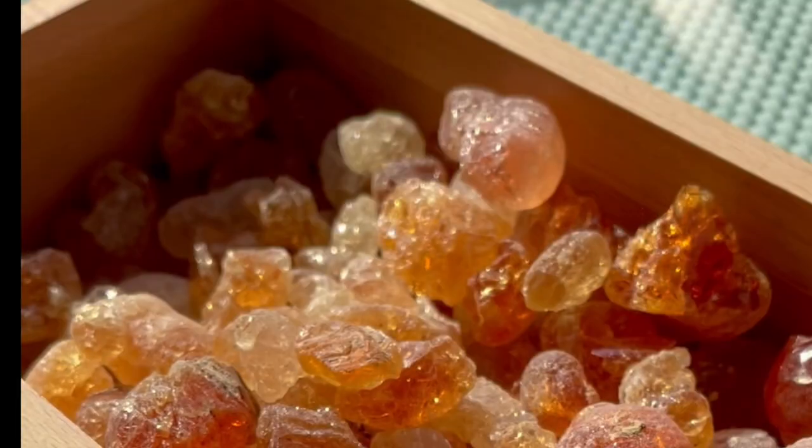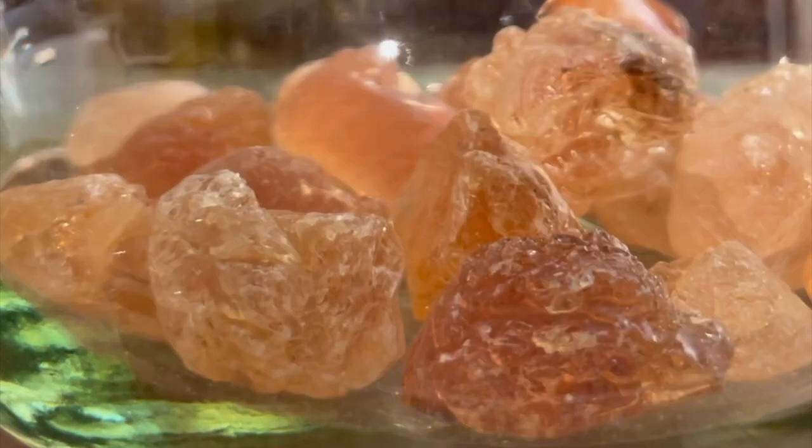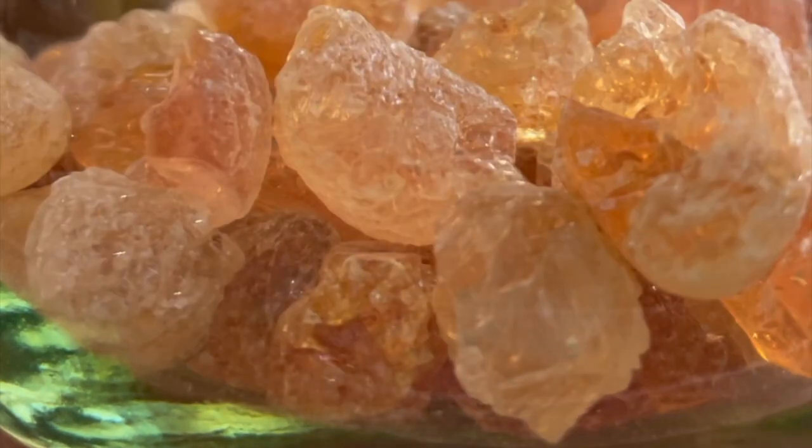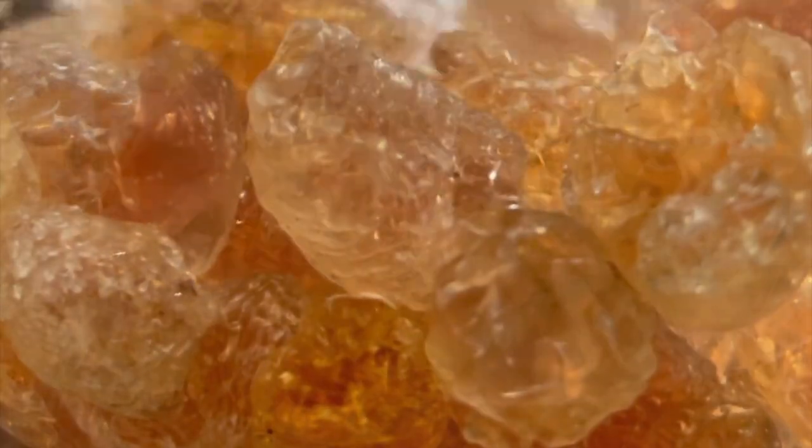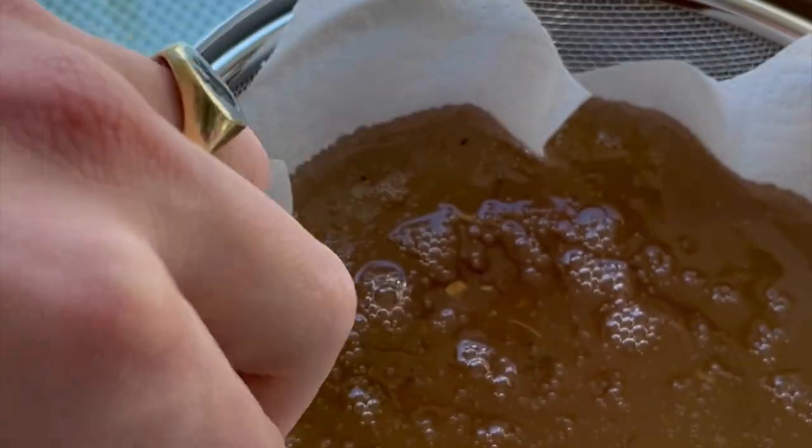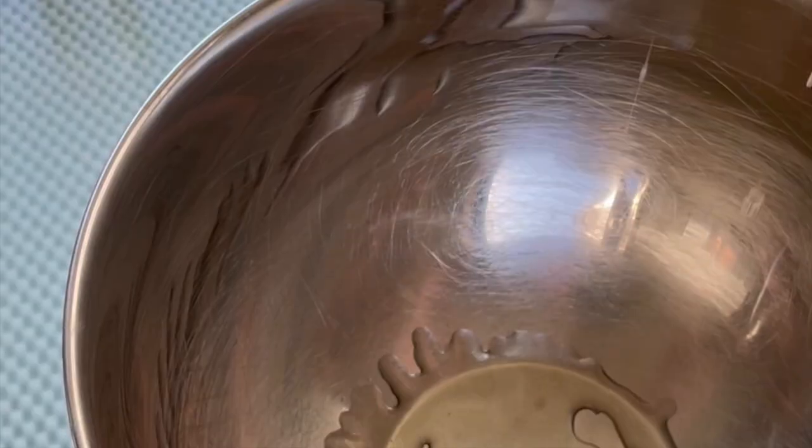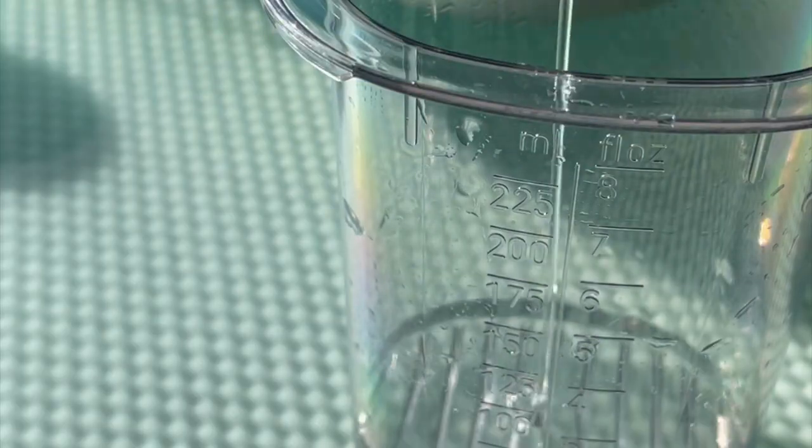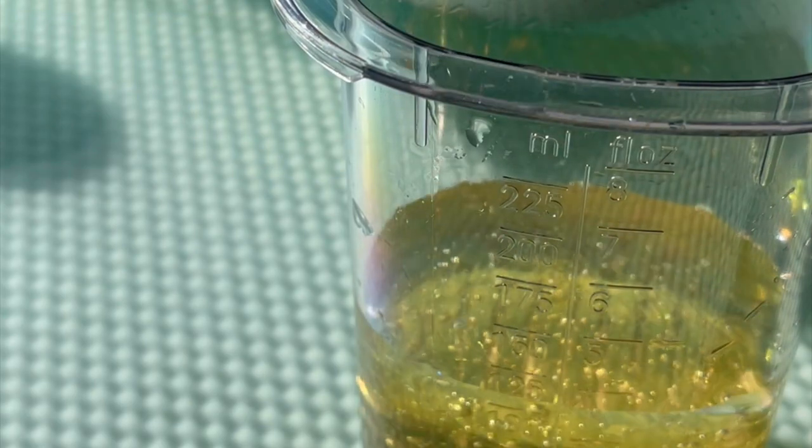I start with gum arabic pieces and dissolve them in distilled water. This can take about a week, but after that I'll sift that and add honey and glycerin to make a beautiful rewetting binder. This is the first step of making my own handmade watercolor paint.